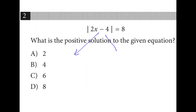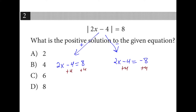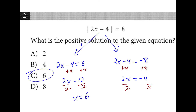We split this into the positive and negative solution. On the left we have 2x minus 4 is equal to 8. On the right we have 2x minus 4 is equal to negative 8. We're going to add 4 to every side, giving us 2x equals 12 and 2x equals negative 4. Then we divide everything by 2, giving us x equals 6, which is the positive solution, and x equals negative 2, which is the negative solution.